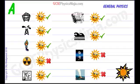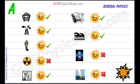And so, there we have it. From the 9 energy resources, 6 have their source from the sun. And 3 of them — nuclear, tidal, and geothermal — don't have the sun as their source.